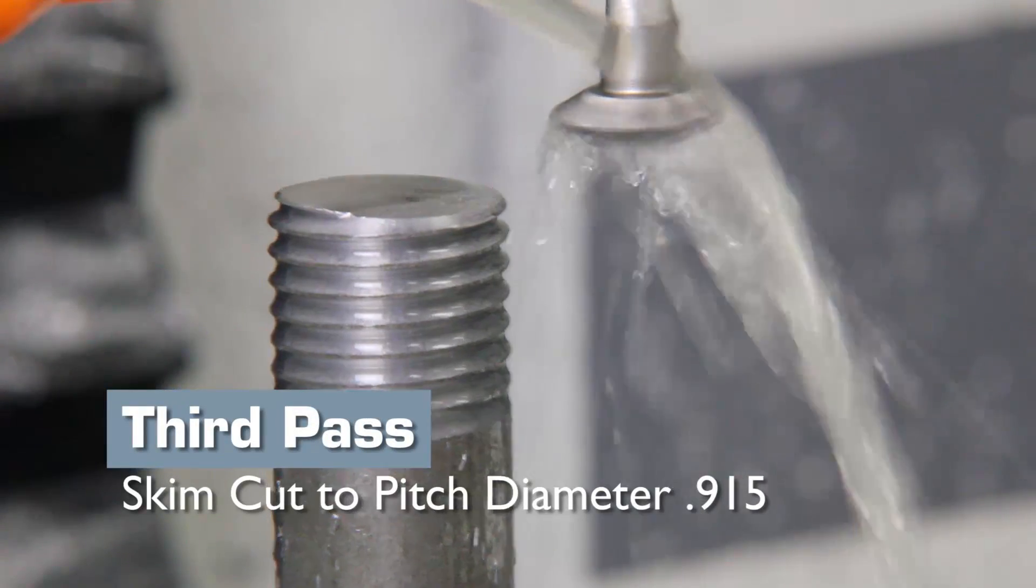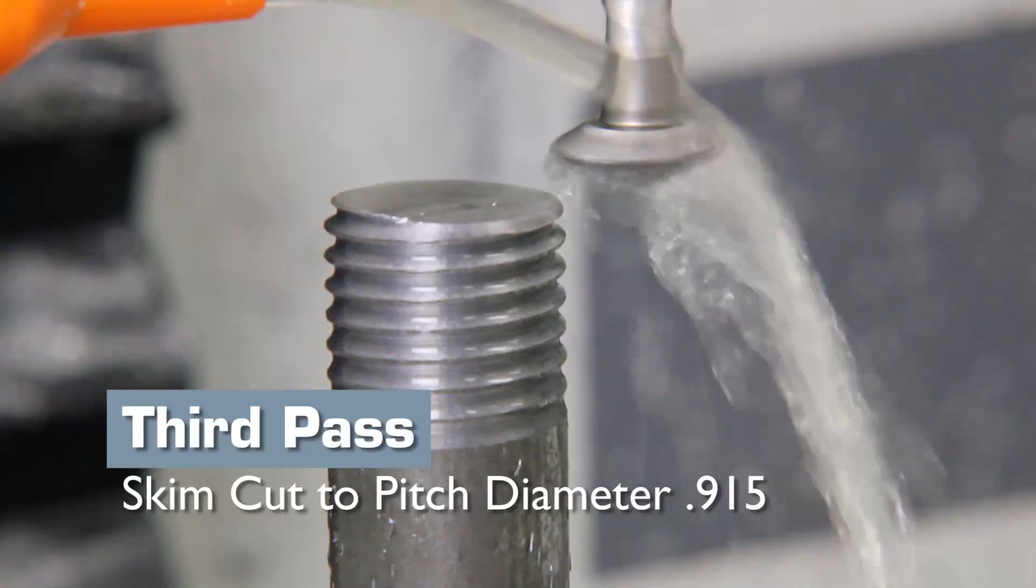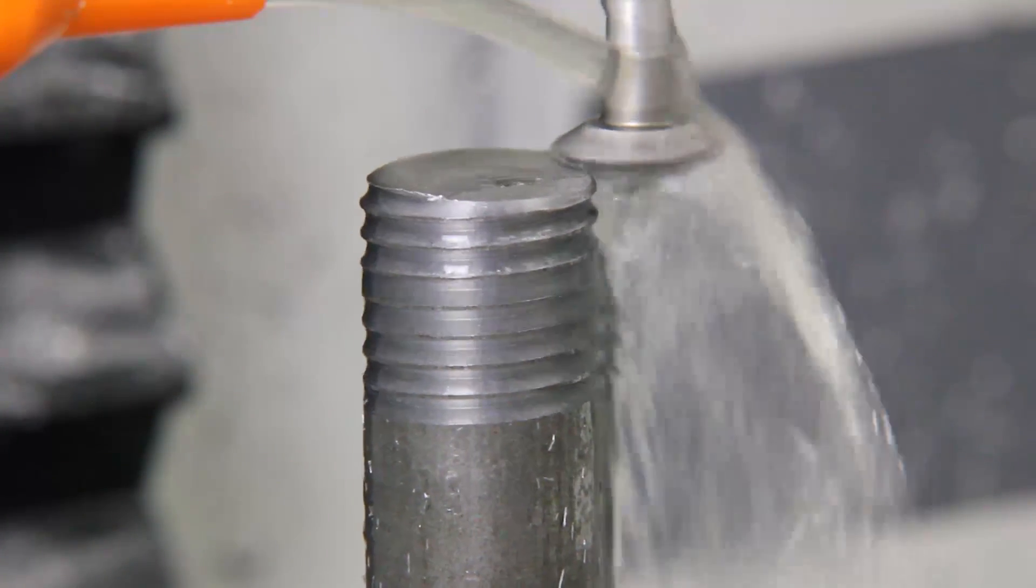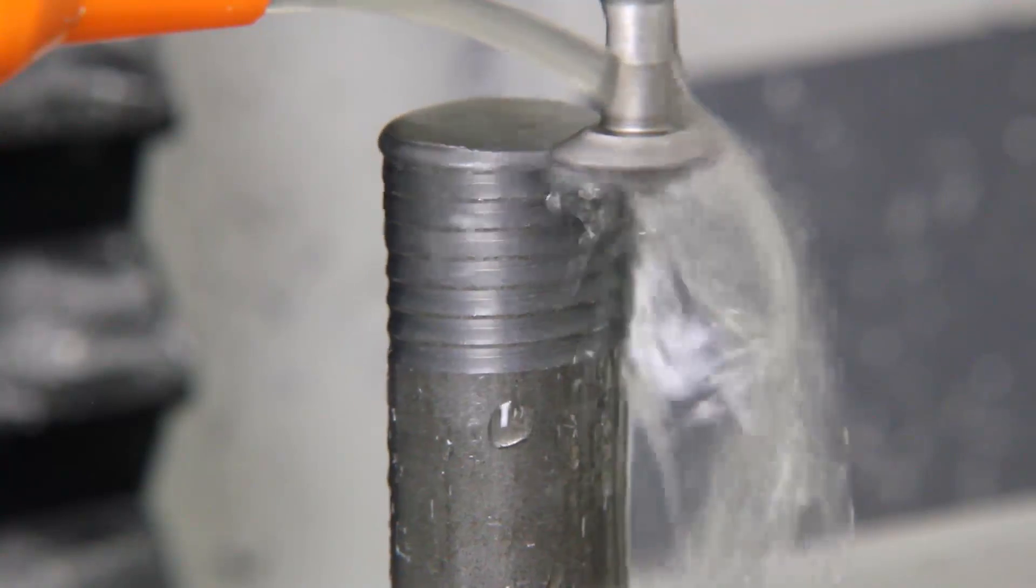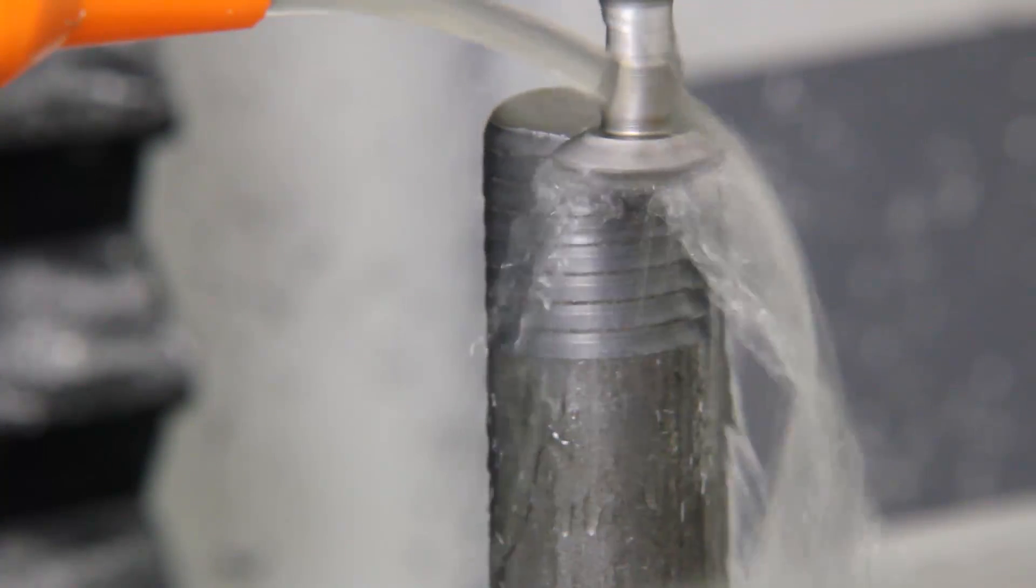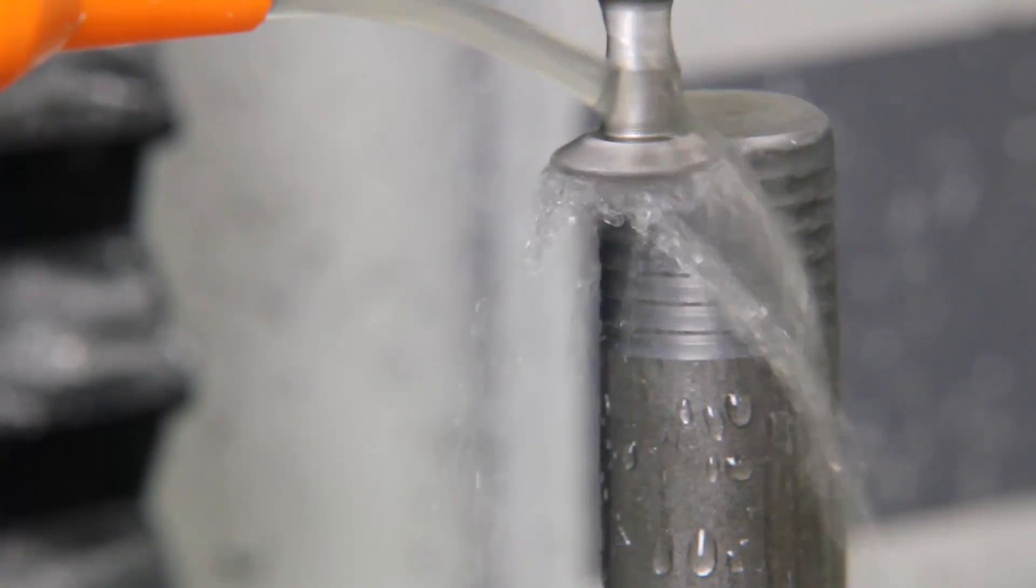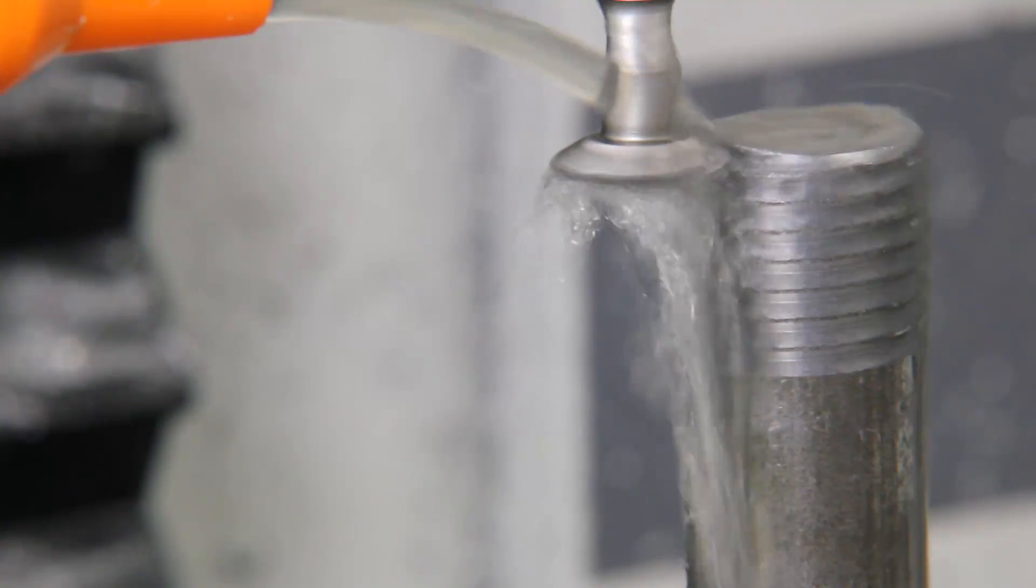The final pass is a skim cut, again to the pitch diameter of 915 thou. The purpose of this is to remove any excess material that may have been present because of cutter deflection. You can hear that the cutter is still taking a very light cut here.